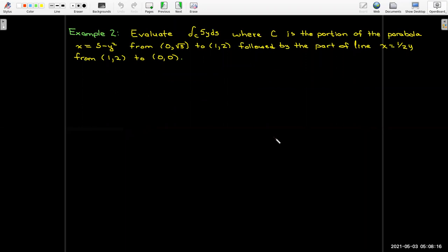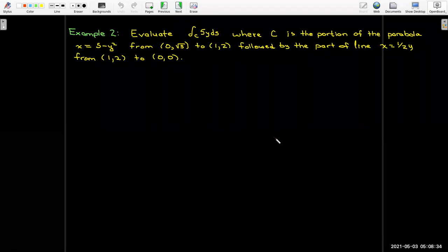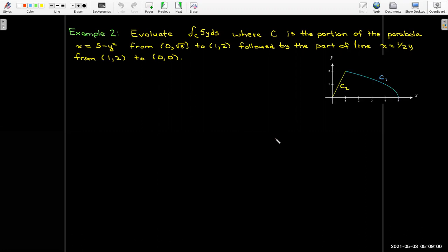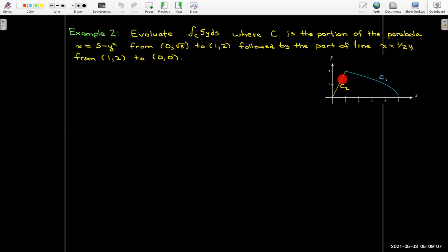Let's look at an example where we have such a case. We're going to evaluate the line integral over the curve c of 5y, where c has two parts. The first part is the portion of the parabola x = 5 - y^2 from the point (0, √5) to the point (1, 2). And then it's followed by a line segment, the part of the line x = (1/2)y from (1, 2) to (0, 0). Our first part is this portion of the parabola and the second part is this line segment.